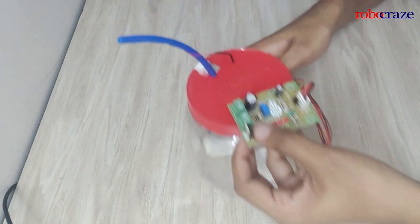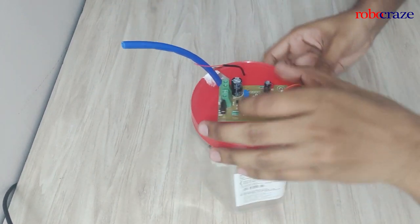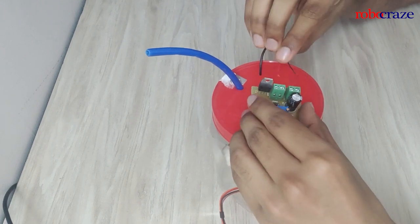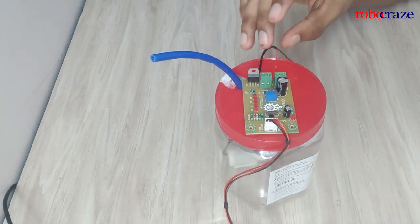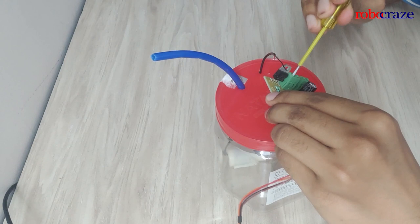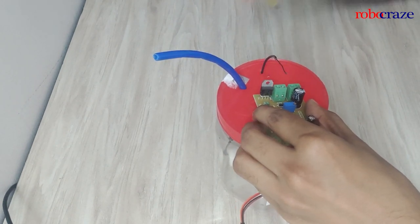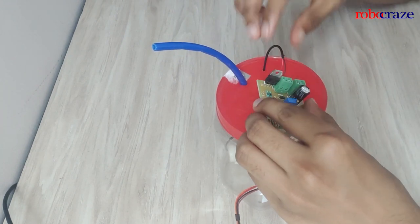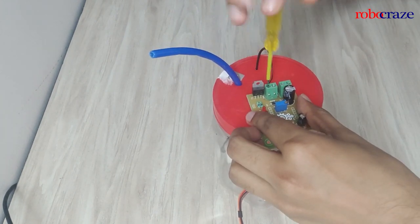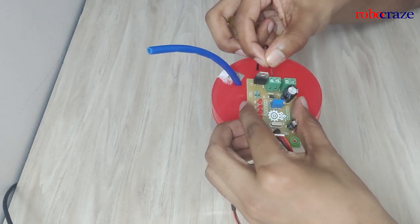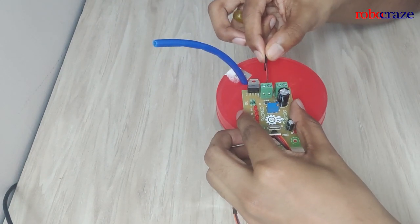So we're going to mount this on here and connect the motor wires to the two output terminals. Use the flat head screwdriver. Make sure the wires are tight and it doesn't come out.